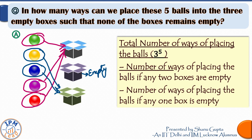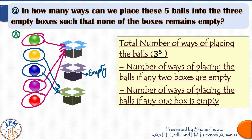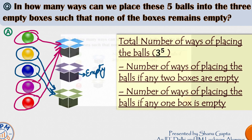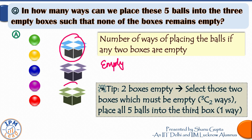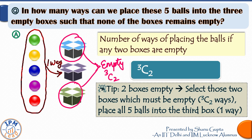We calculate the total number of ways of placing these balls — which we already found to be 3 raised to the power 5. Out of these, if we subtract the number of ways where any two boxes are empty or any one box is empty, we achieve our objective. What is the number of ways of placing the balls if any two boxes are empty? We first select the two boxes which are left empty — 3C2 ways of doing that — then all five balls must be placed in the remaining third box, which can be done in only one way. Hence there are three ways of placing the balls if any two boxes remain empty.